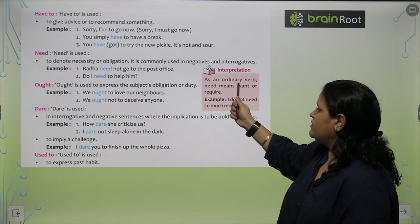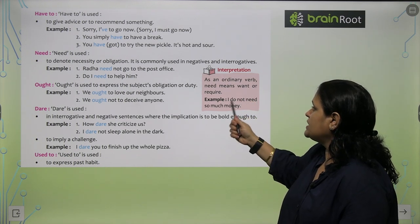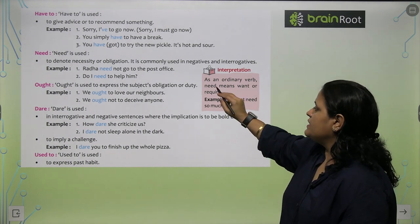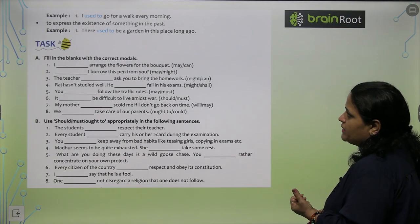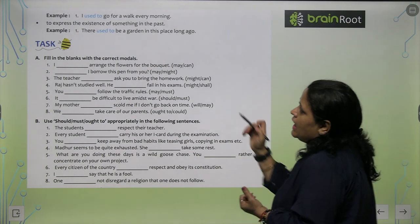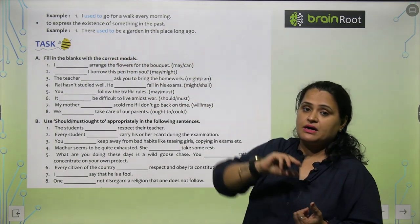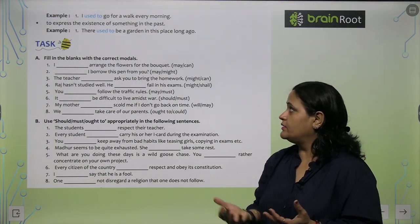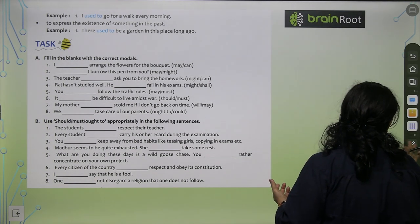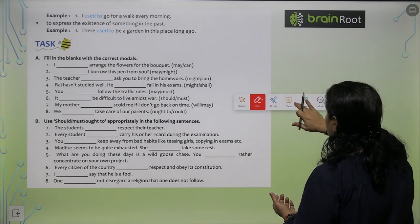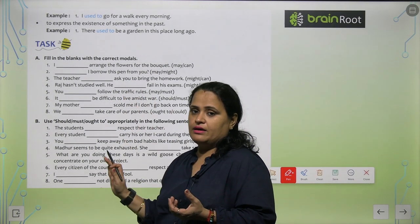As an ordinary verb, 'need' means want or require — like 'I do not need so much money.' 'Used to' can also express the existence of something in the past — like 'There used to be a garden in this place long ago.' You have to learn all these modals, then only you will be able to apply them correctly.